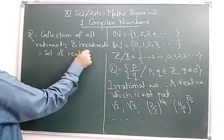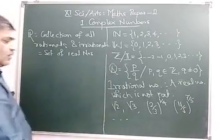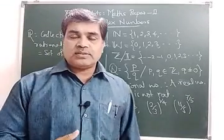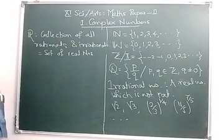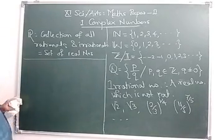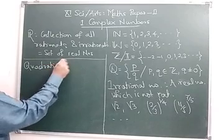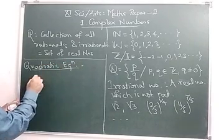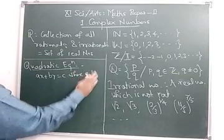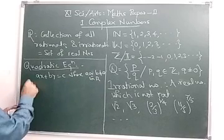So the hierarchy of sets is: N (natural numbers) is a subset of W (whole numbers), W is a subset of Z (integers), Z is a subset of Q (rational numbers), and Q is a subset of R (real numbers). R is the union of the set of rational and irrational numbers.